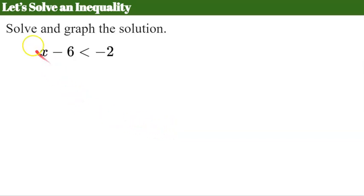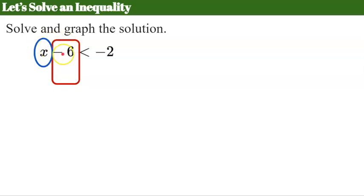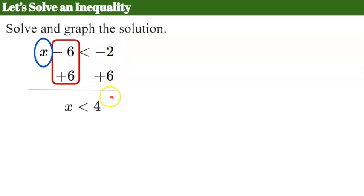Let's solve an inequality. Our instructions are to solve and to graph the solution. We have the inequality x minus 6 is less than negative 2. Just as when we solved equations, we identify our variable term and what is happening to it — it is being subtracted by 6. We want to create a zero pair so we're left with just x on the left. The opposite of negative 6 is positive 6, so we add 6 to both sides. This gives a zero pair, leaving x less than negative 2 plus 6, which is positive 4.